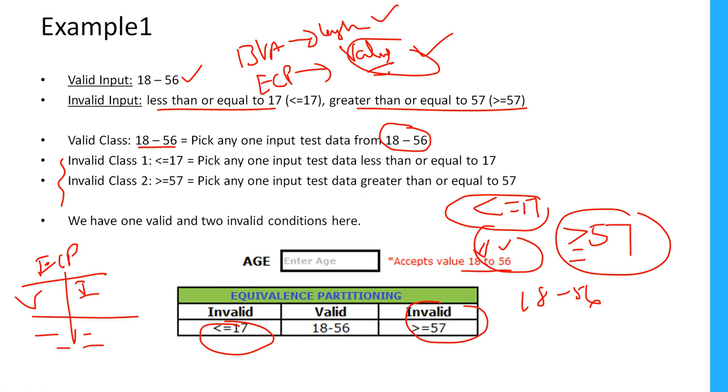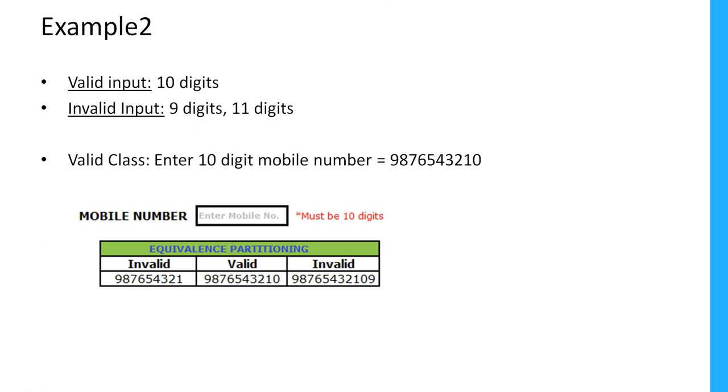Now let's see one more example. In this example I have a text field which allows us to provide the phone number, which should contain 10 digits. Only 10 digits phone number it should allow.